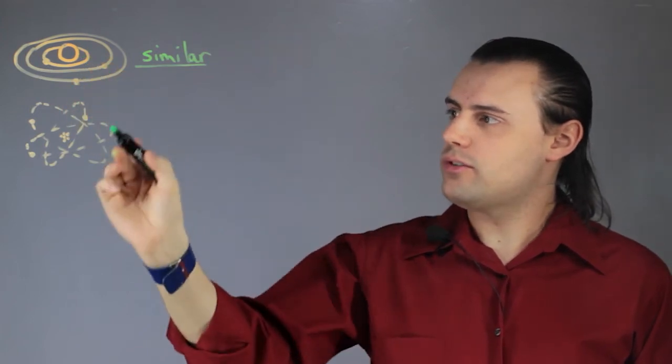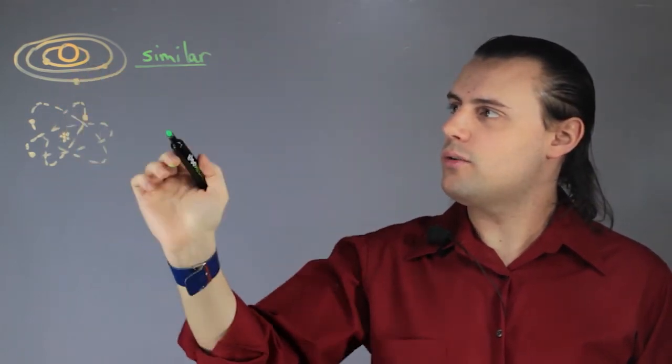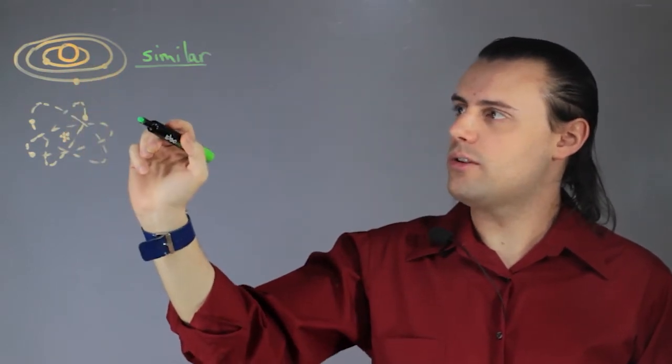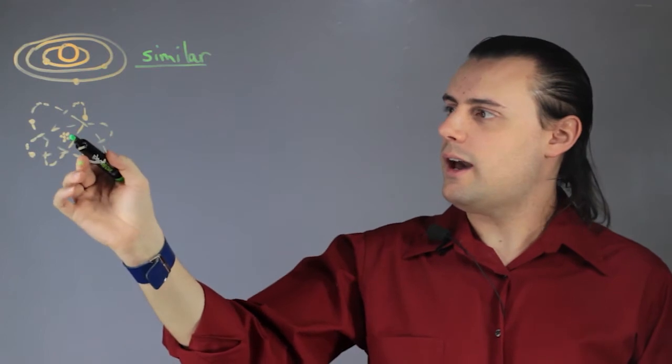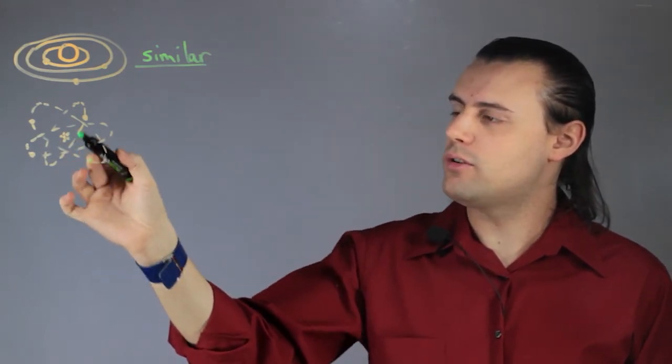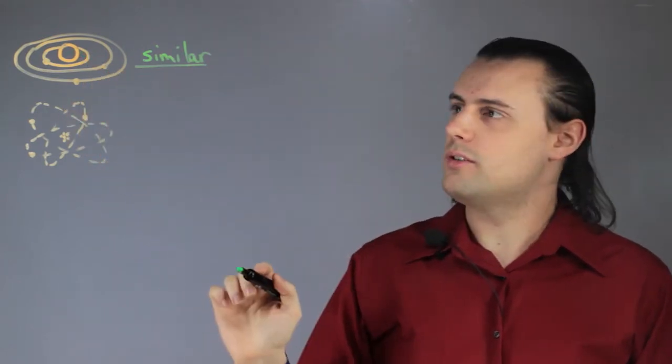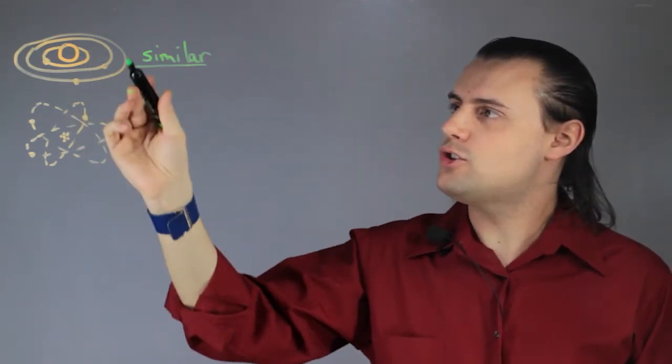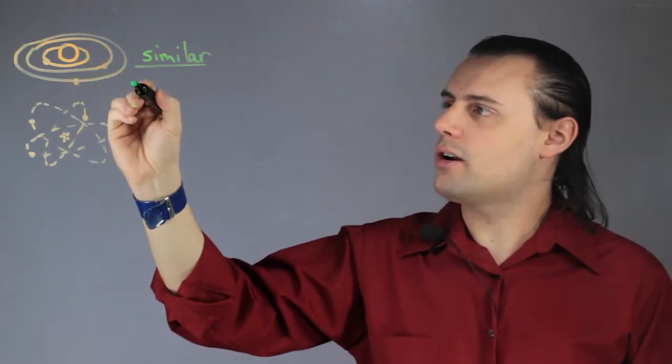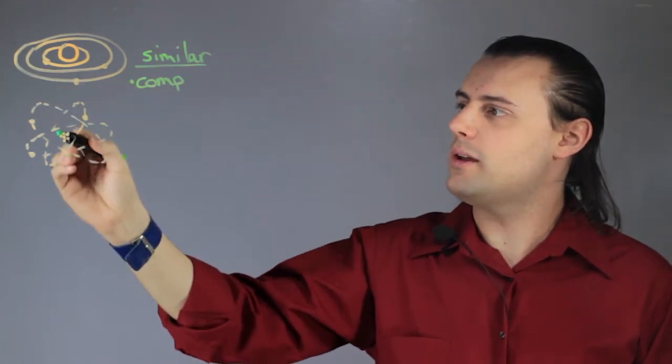We see that both a solar system and an atom have a nucleus. In the case of the solar system it's a star, or in our solar system we call it the Sun. And in an atom the center is the nucleus which is made up of protons and neutrons. A star is also made up of protons and neutrons, mainly hydrogen and helium. So we see that both are composite objects, meaning they have a nucleus and objects that orbit around them.